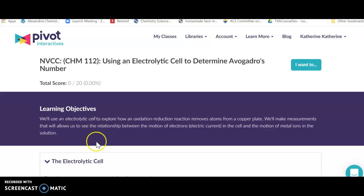We're going to be using an electrolytic cell to determine Avogadro's number. Remember that Avogadro's number is a number of anything per mole, and in this experiment we're going to figure out how many atoms of copper we've used up in this experiment per mole of copper.